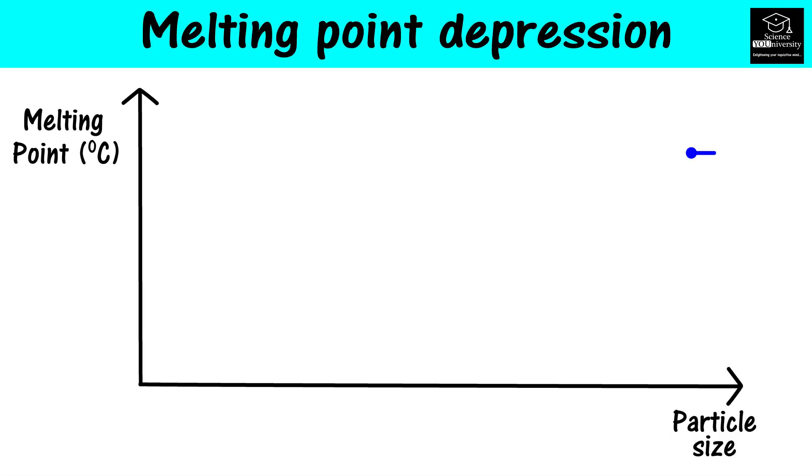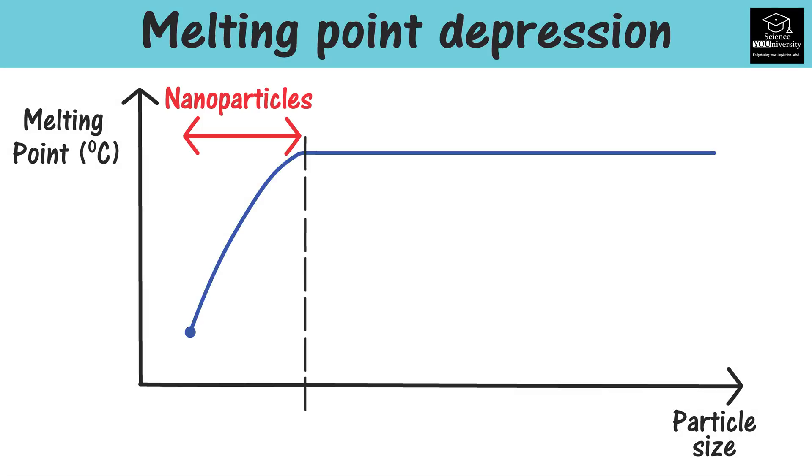The differences in melting points is another example. The melting point of bulk material doesn't depend on the size of the particles. However, at nanoscale, melting point depends on the size of the nanoparticles. The smaller the nanoparticle, the lower the melting point. This phenomenon is known as melting point depression.